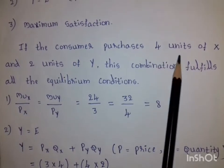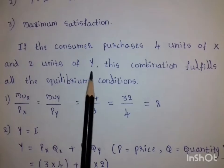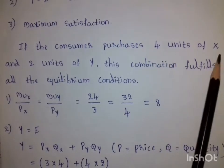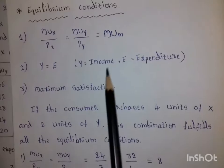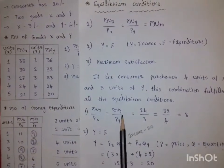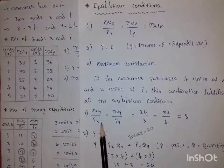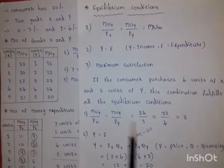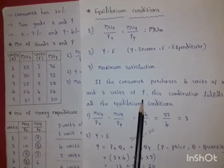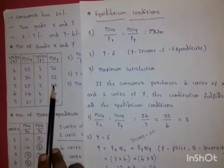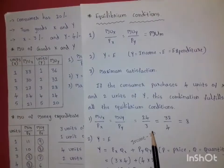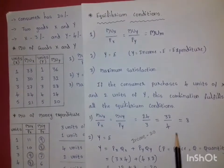If the consumer purchases 4 units of X and 2 units of Y, this combination fulfills all the equilibrium conditions. For good X at 4 units, MUx = 24; so 24/3 = 8. For good Y at 2 units, MUy = 32; so 32/4 = 8. Therefore MUx/Px = MUy/Py = 8, satisfying the first condition.